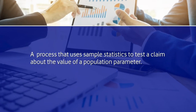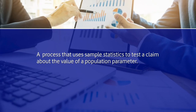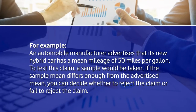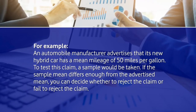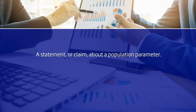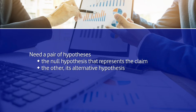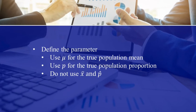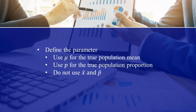Hypothesis testing is a process that uses sample statistics to test a claim about a population parameter. For example, an automobile manufacturer advertises that a new hybrid car has a mean mileage of 50 miles per gallon. To test this claim a sample is taken, and if the sample mean differs enough from the advertised mean, you decide whether to reject or fail to reject the claim. We must define the parameter using mu for population mean or p/rho for population proportion — not x-bar.